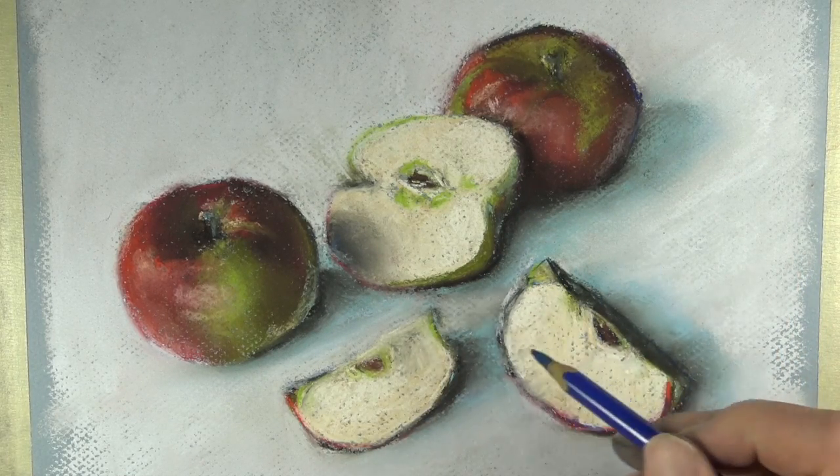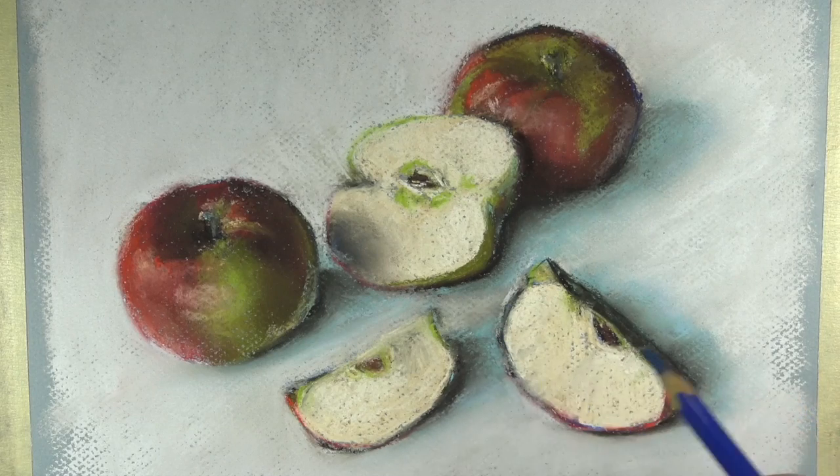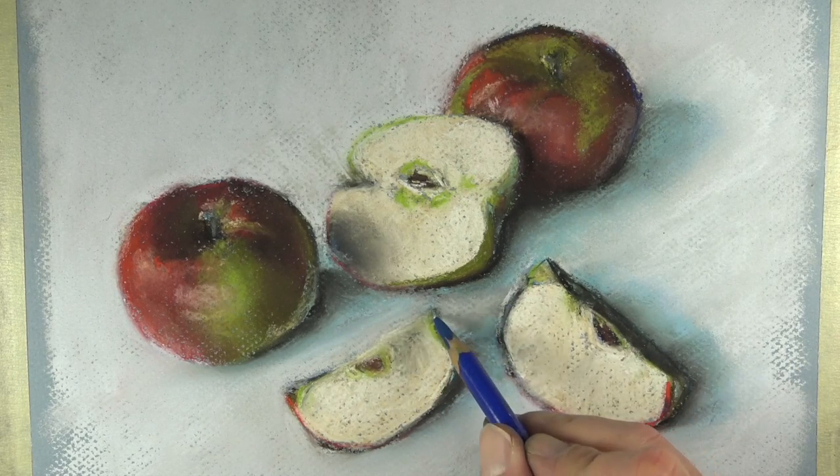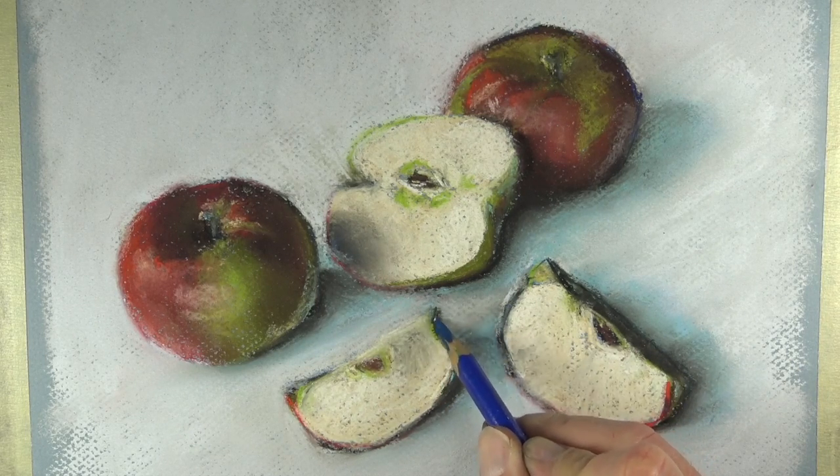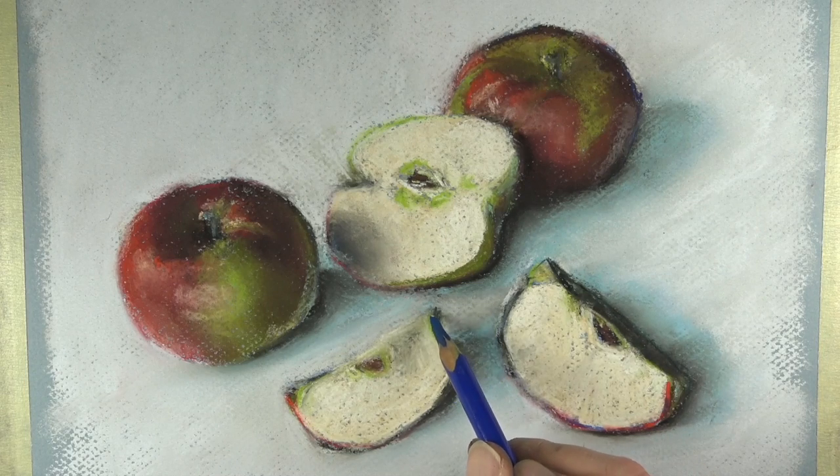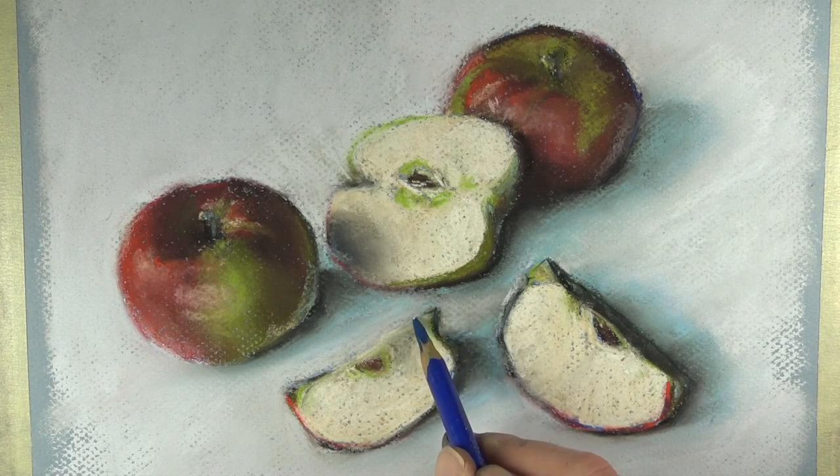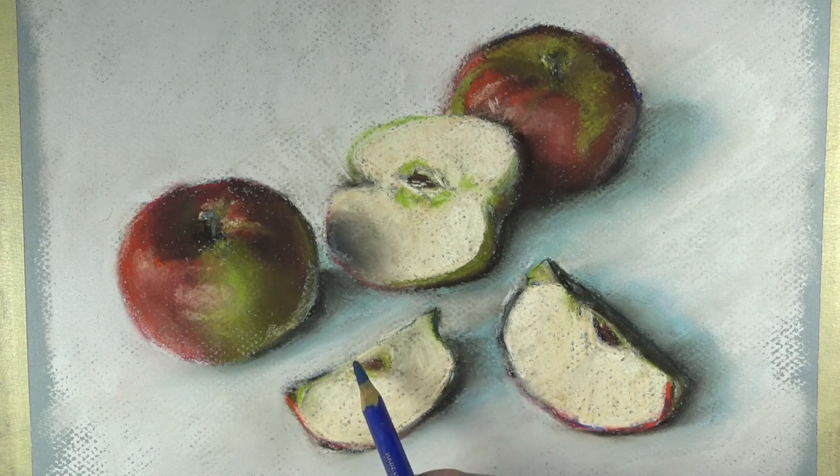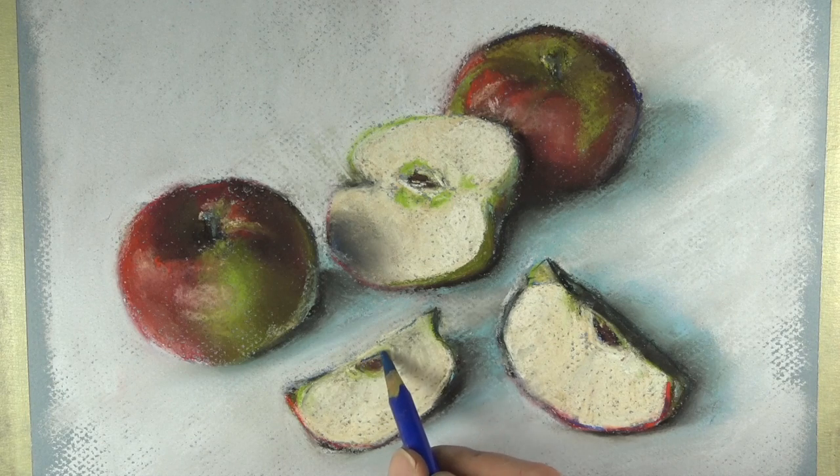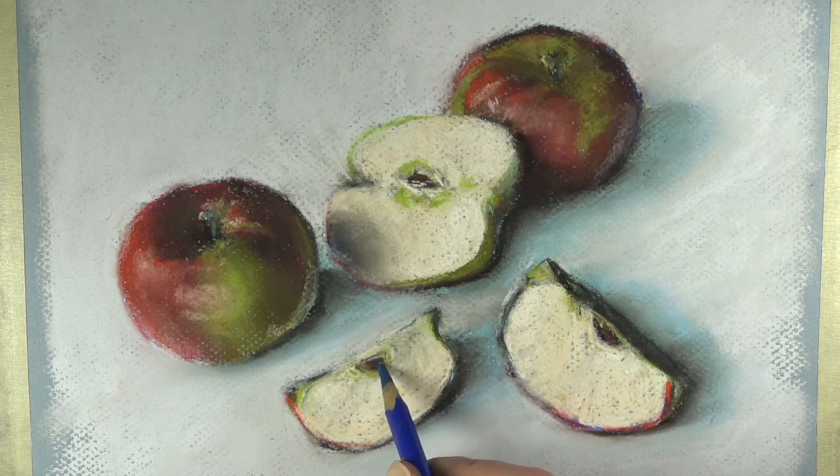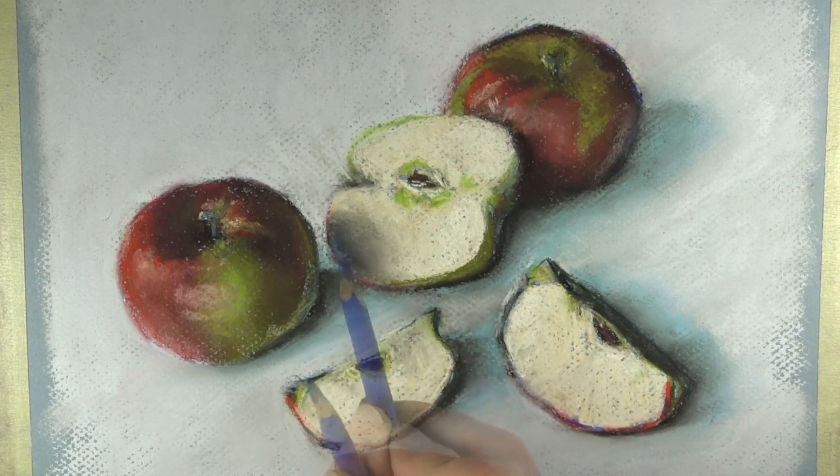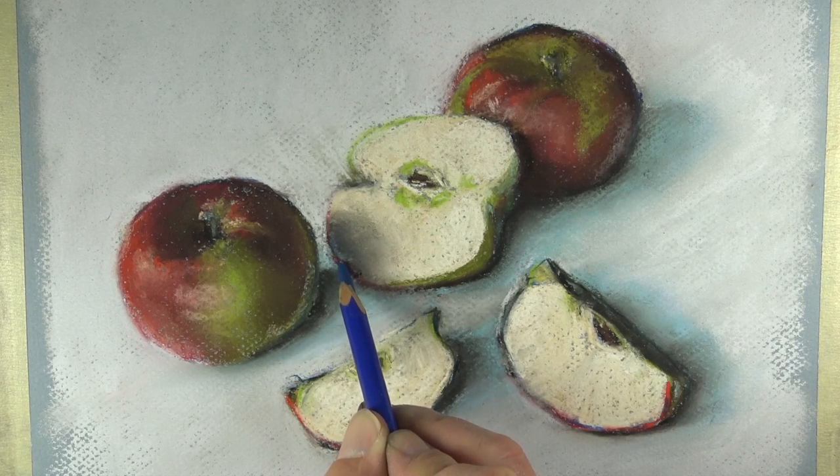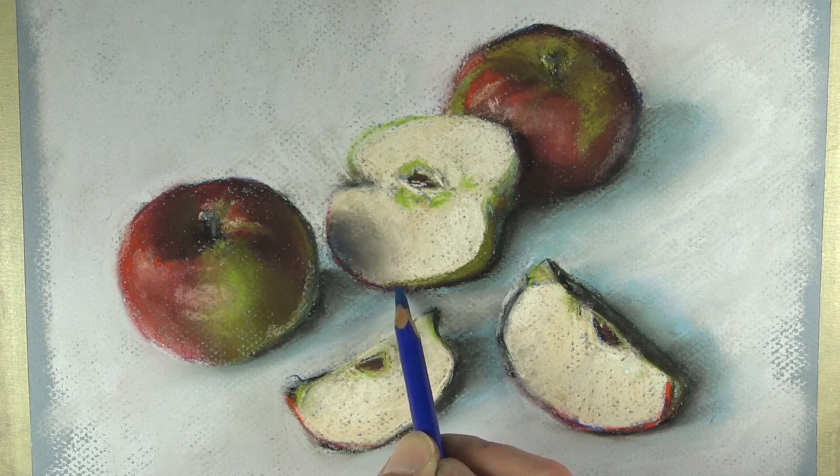Now it's back with a sharpened blue pastel pencil, and we'll just define some of the edges even further and add a few more refinements to the edges of some of the apples. It may be tempting to reach for a black pastel at this point, but the blue does an adequate job of creating enough contrast. Plus, it has the added benefit of adding that additional color that we want in the piece anyway.